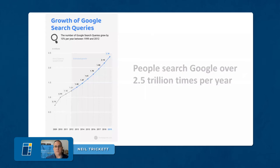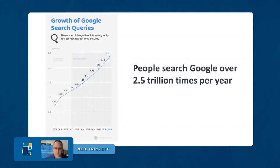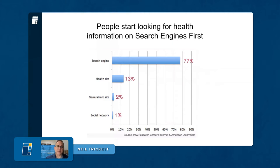People are using Google more and more every year — we're now up to over two and a half trillion searches per year on Google, and that's only going to strengthen as the world gets more digitized. People really start looking for health information first on search engines. They don't go to social media to answer why their knee or back is hurting — most people are going to Google it, trying to get free information and then stumble across providers.